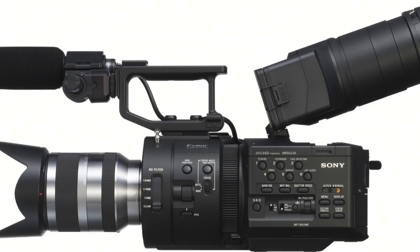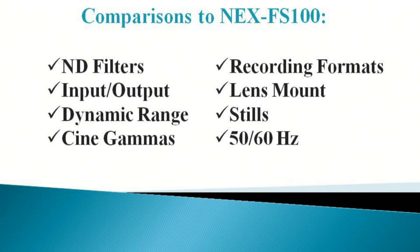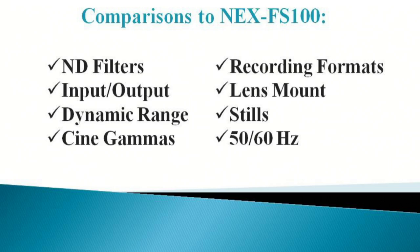There she is — it looks a lot like the NEX FS100. Let's compare the two. First and foremost: ND filters. That's right, ND filters. Why is that important? Because when you're on a 35mm chip, you've got to control your light. You can't just be wide open all the time — your depth of field will always be too shallow. The FS700 has built-in ND filters; the FS100 does not.